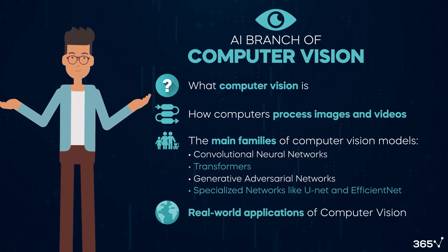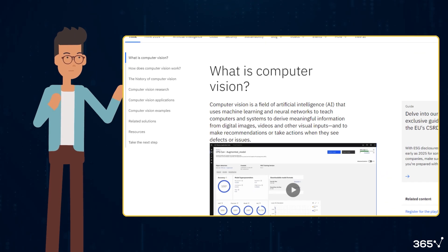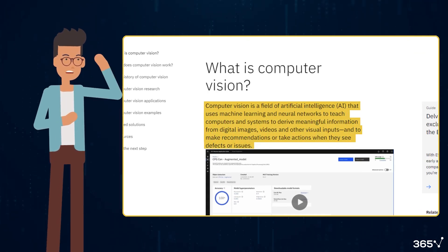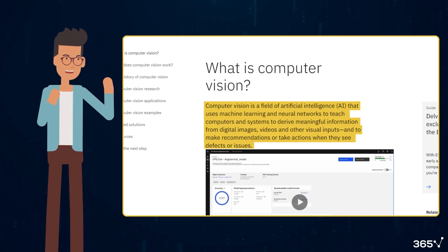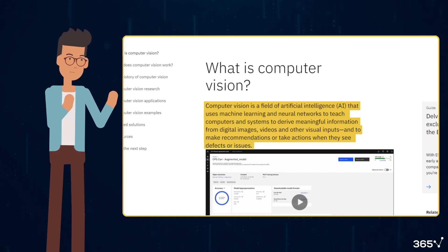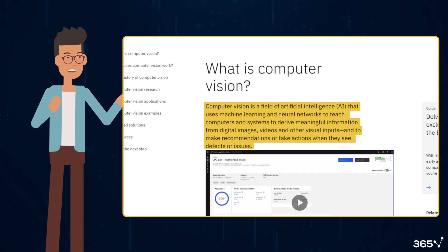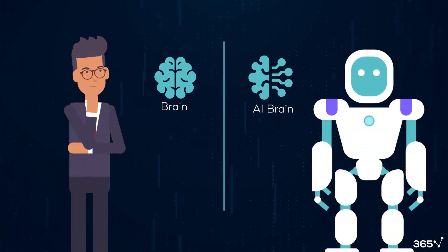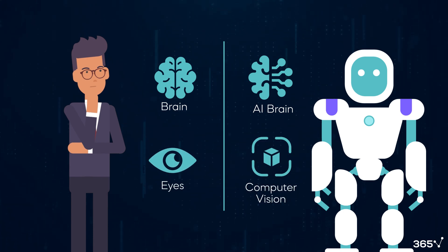IBM defines computer vision as an AI field that uses machine learning and neural networks to teach computers to derive meaningful information from digital images and videos. Consider this analogy: if AI functions as the brain, computer vision serves as the eyes.